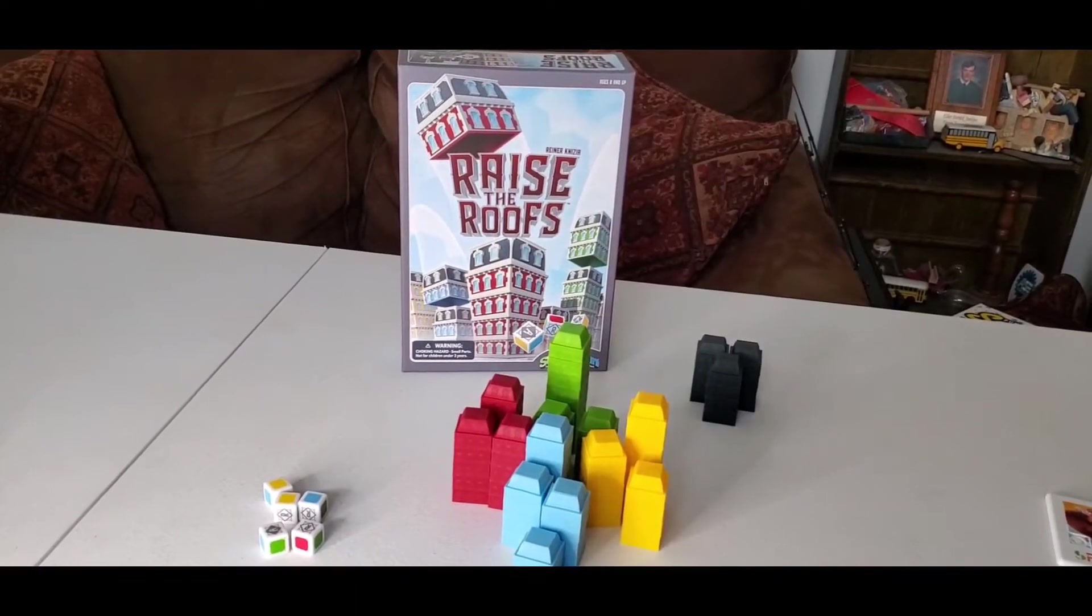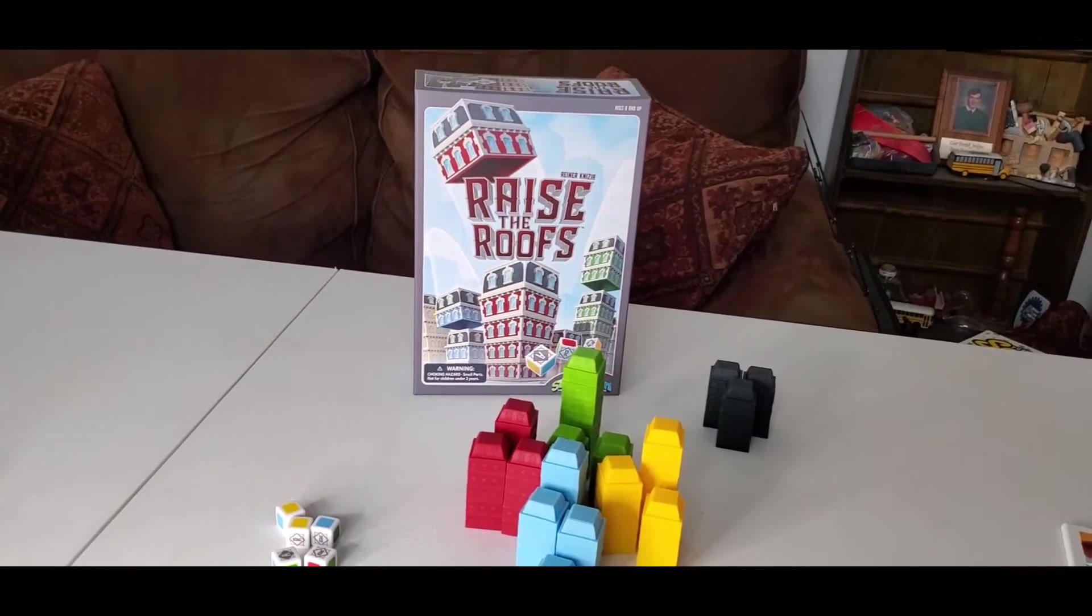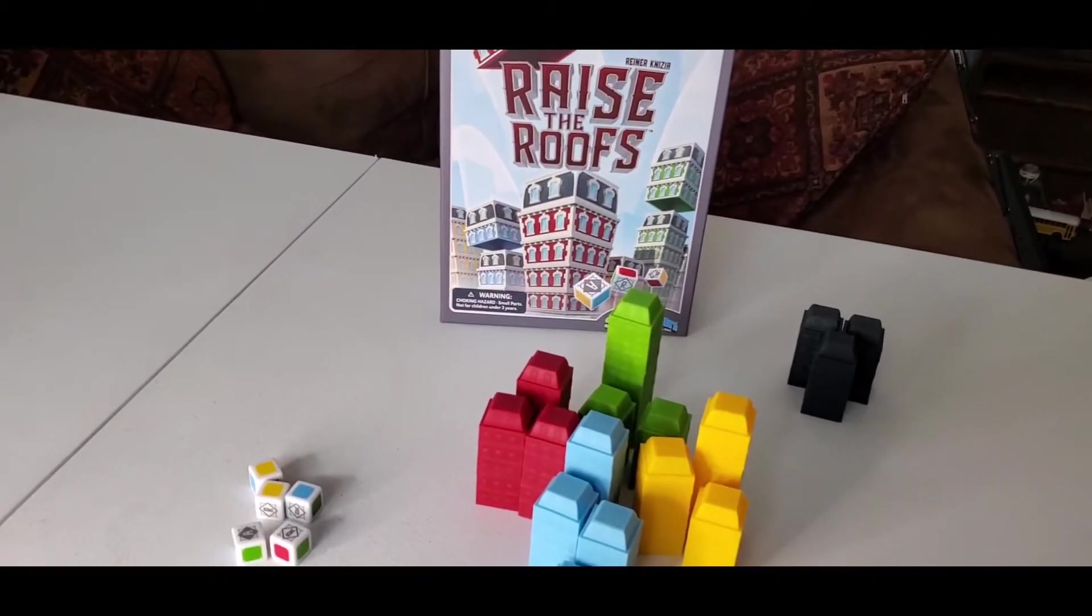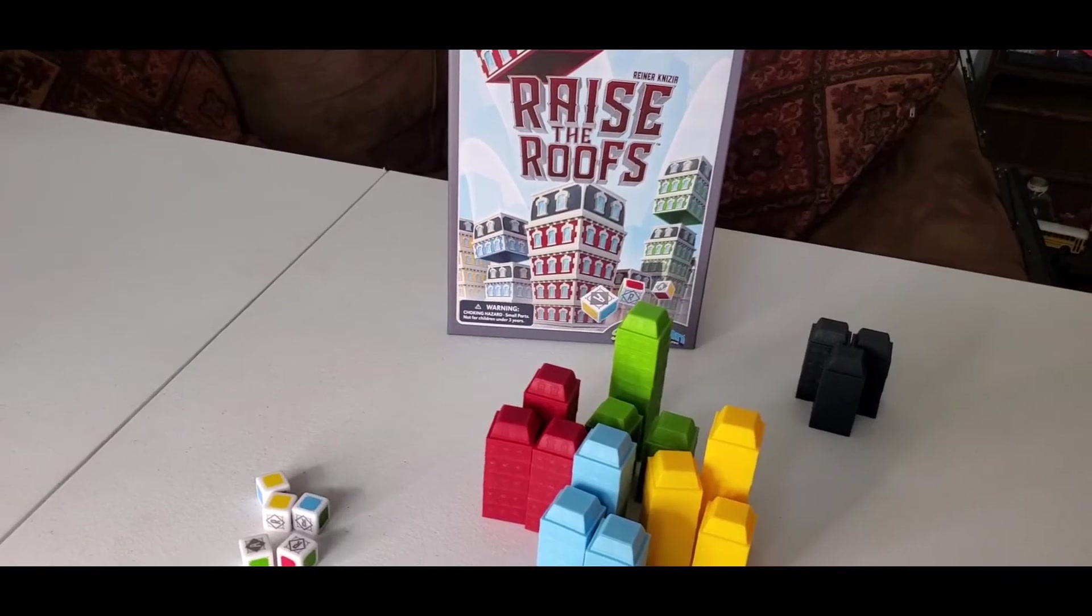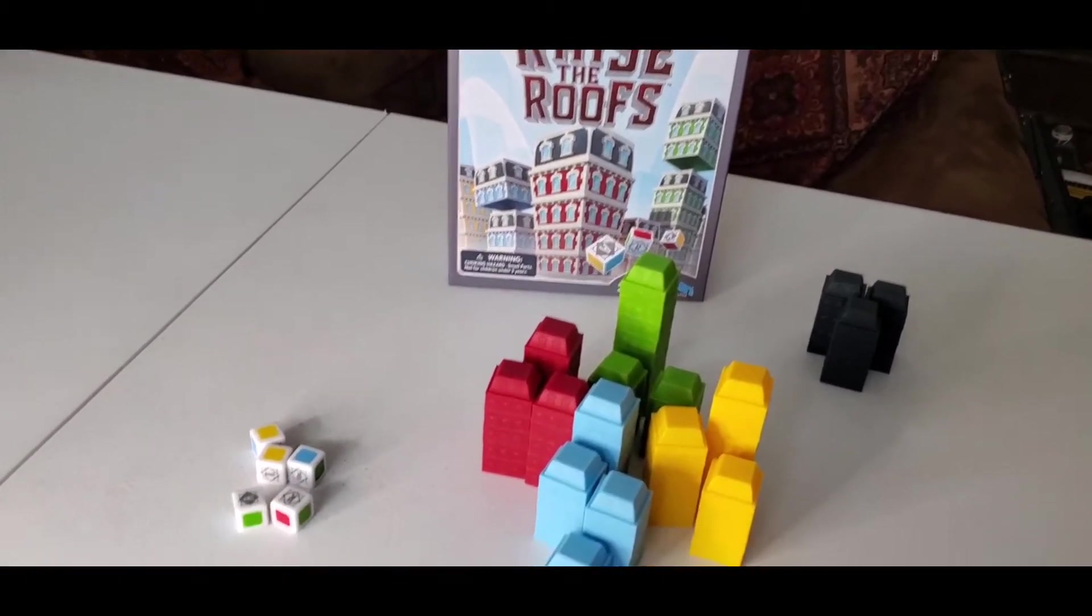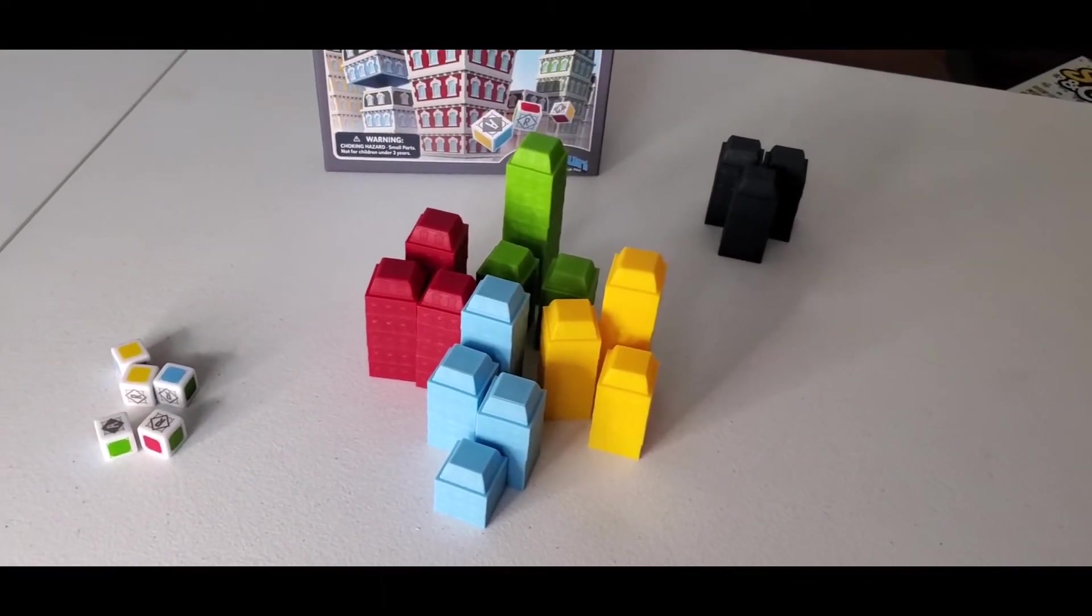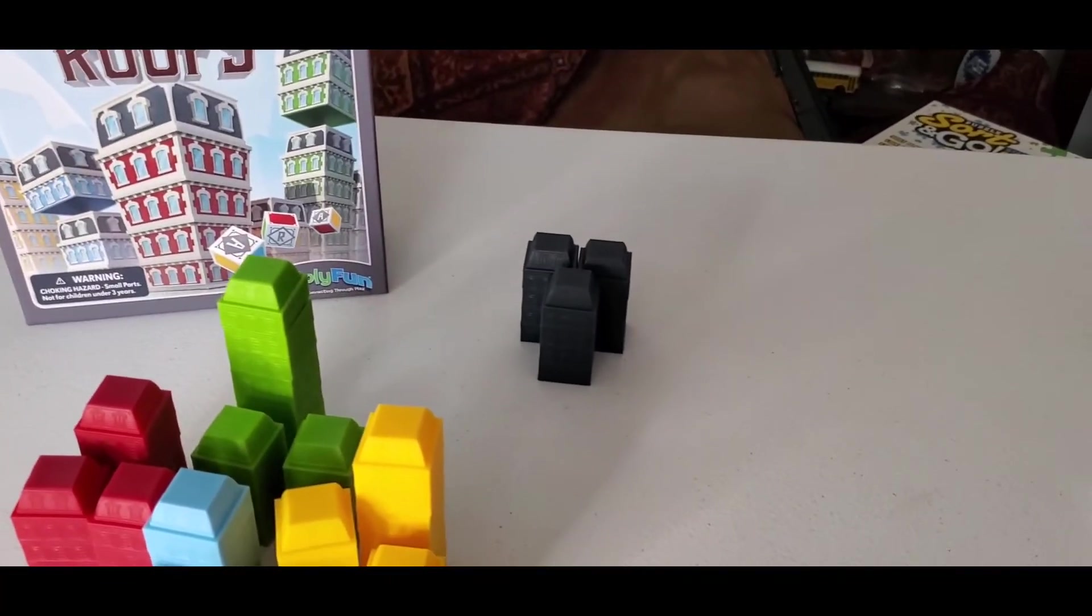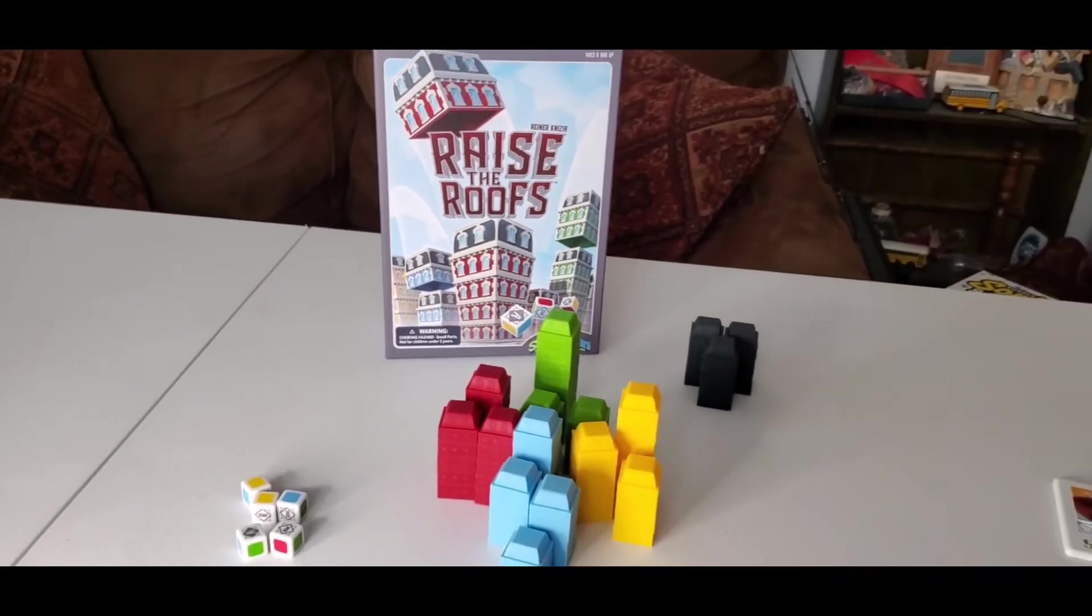Raise the Roofs is for ages eight and above, two to four players, and it practices strategy and problem solving. In this one, you are using your strategic problem solving as you roll the dice and build your towers. You are trying to create the tallest combined tower to win the game. You're going to roll the dice, which tells you which colors you can use out of the center here to build your towers. And then towards the end of the game, you get to add these black ones over here, which are the bonus pieces. And whoever has the tallest tower wins.